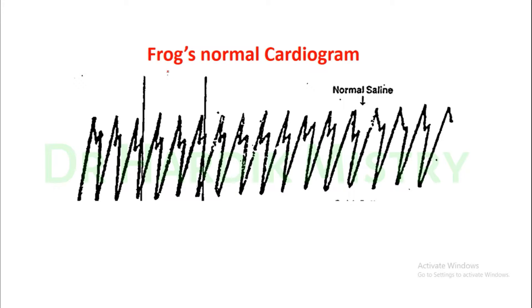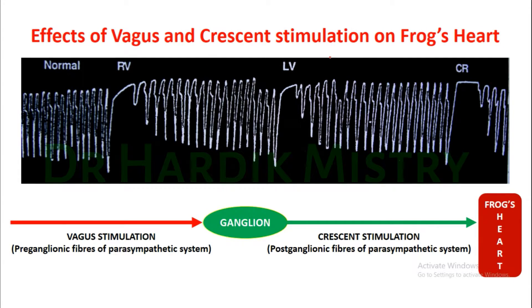First of all, this is the frog's normal cardiogram. Whenever you are finding this recording as a graph, this is the frog's normal cardiogram. Effect of vagus and crescent stimulation on frog's heart — this is the right vagus, left vagus, and crescent stimulation.